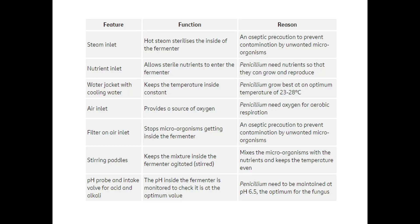The air inlet provides a source of oxygen, as penicillin needs oxygen for aerobic respiration. A filter on the air inlet stops microorganisms from getting inside — an aseptic precaution against contamination. Stirring paddles keep the mixture agitated, mixing microorganisms with nutrients and keeping the temperature even. Finally, a pH probe and intake valve for acid and alkali monitor the pH, which should be at the optimum value of 6.5 for the fungus.